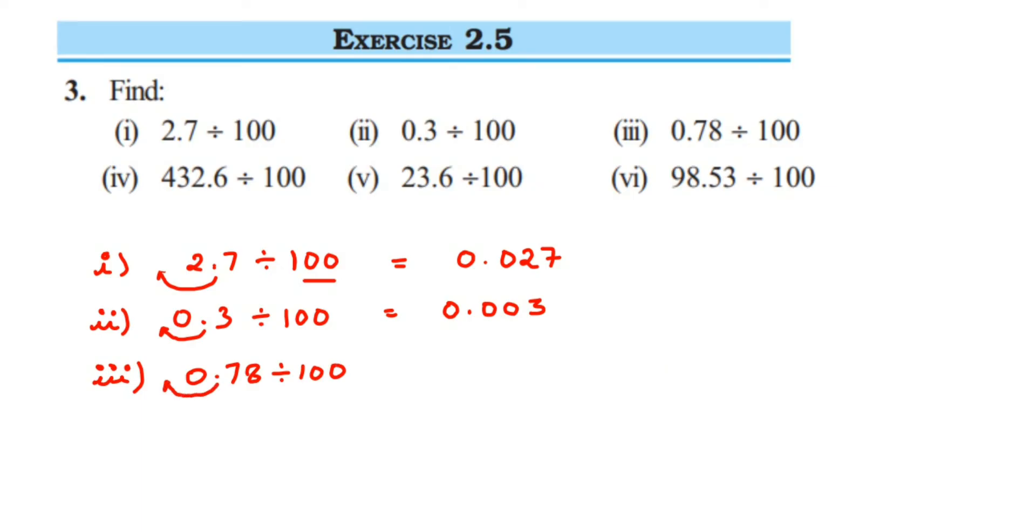Fourth question: 432.6 divided by 100. So decimal is here, two places to the left side. It will become 4.326. Fifth question: 23.6 divided by 100. Two places to the left side, so it will become 0.236.